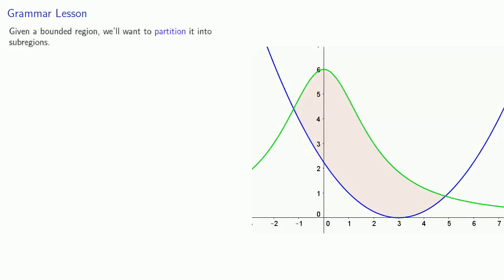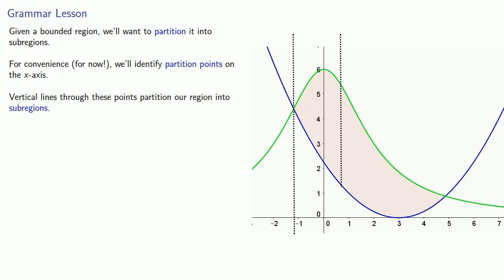Now before proceeding, we'll have to introduce a grammar lesson. Given a bounded region, we want to partition it into subregions. For convenience, for now, we'll identify partitioned points on the x-axis, and then use vertical lines through these points to partition our region into subregions.